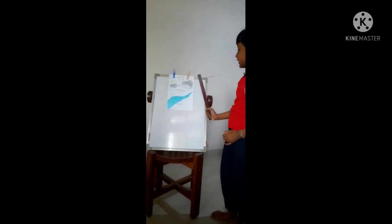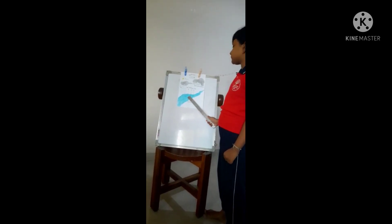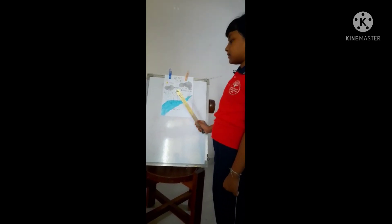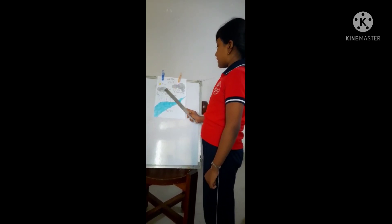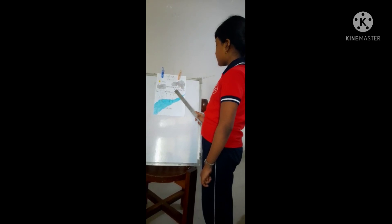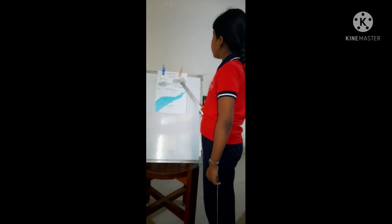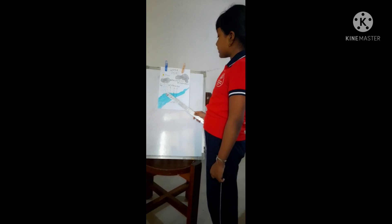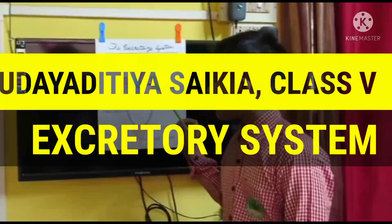This is the water cycle. This is the sun and this is the river. The sun takes water from the river into the air — this is called evaporation. Then the water in the air becomes cloud — this is called condensation. When the cloud becomes heavy, it falls to earth's surface as rain.